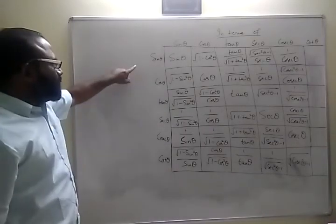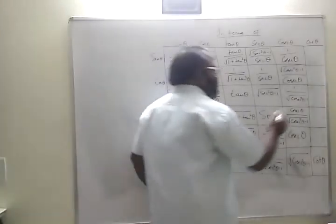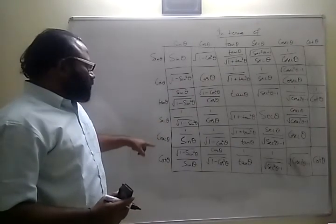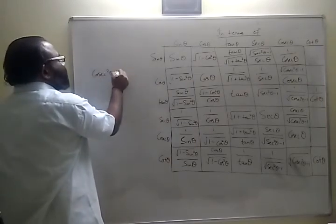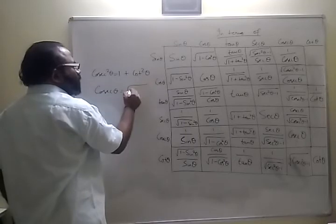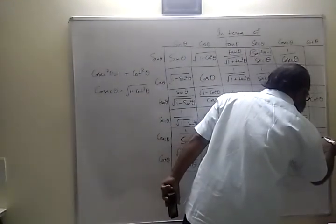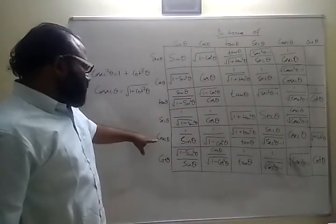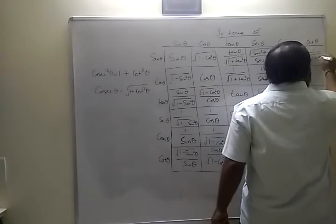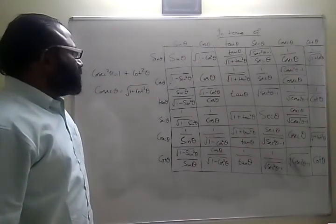Now let's do everything in terms of cot theta. Cot theta is just cot theta, and tan theta is 1 by cot theta. Using the identity 1 plus cot squared theta equals cosecant squared theta, cosecant theta equals root of 1 plus cot squared theta. And sine theta is 1 by cosecant, so sine theta equals 1 by root of 1 plus cot squared theta.